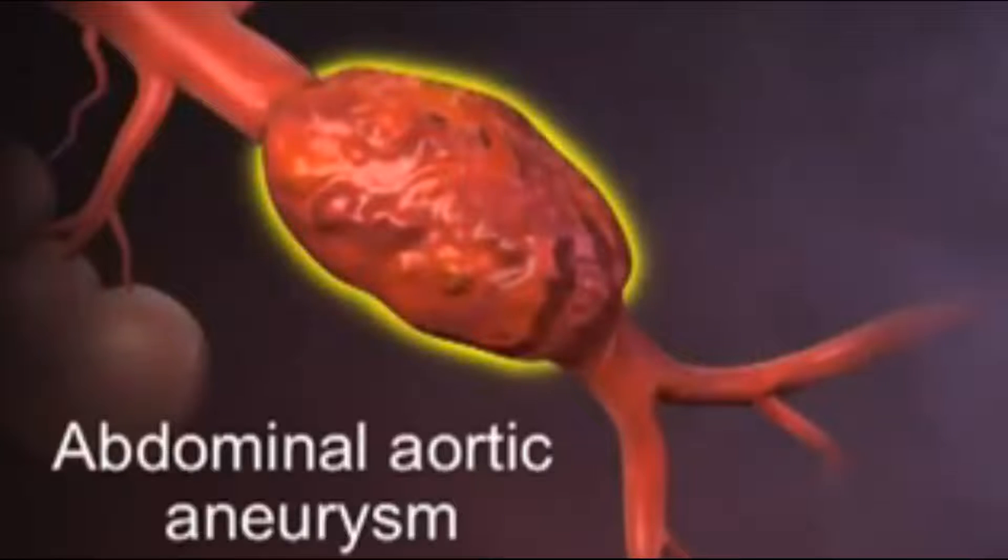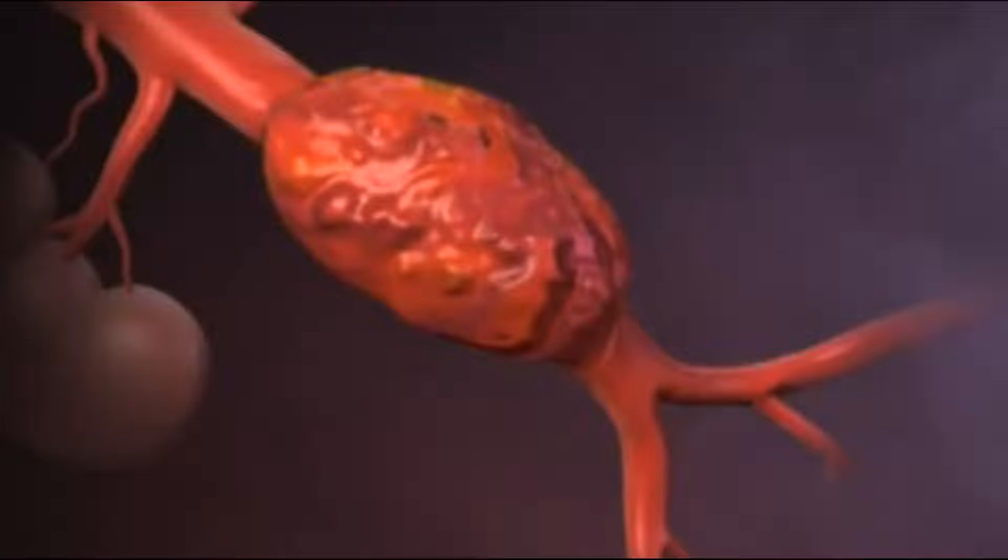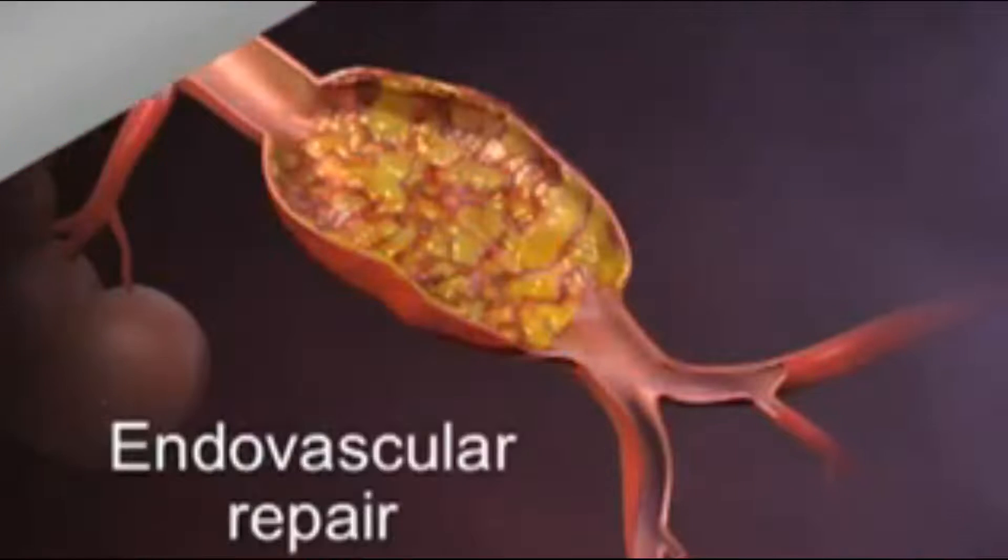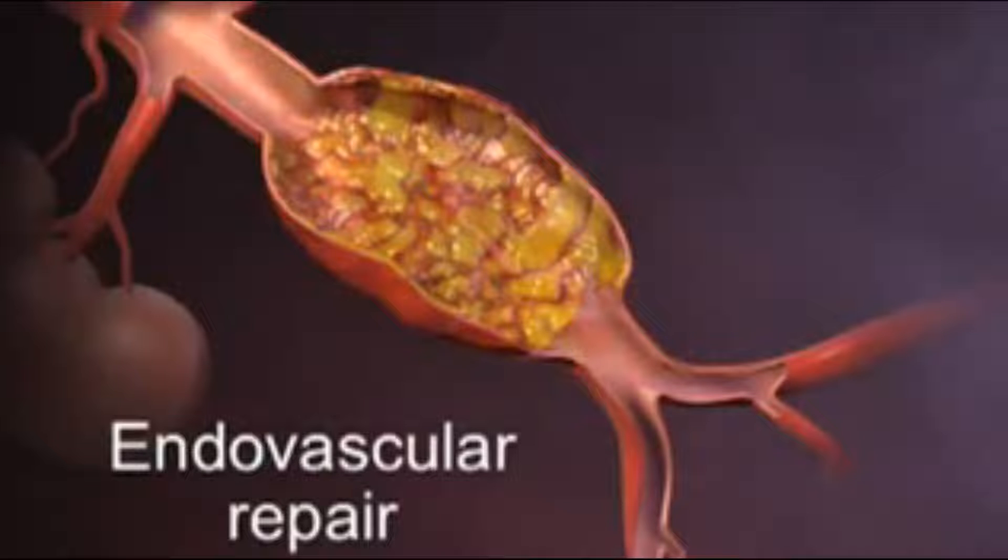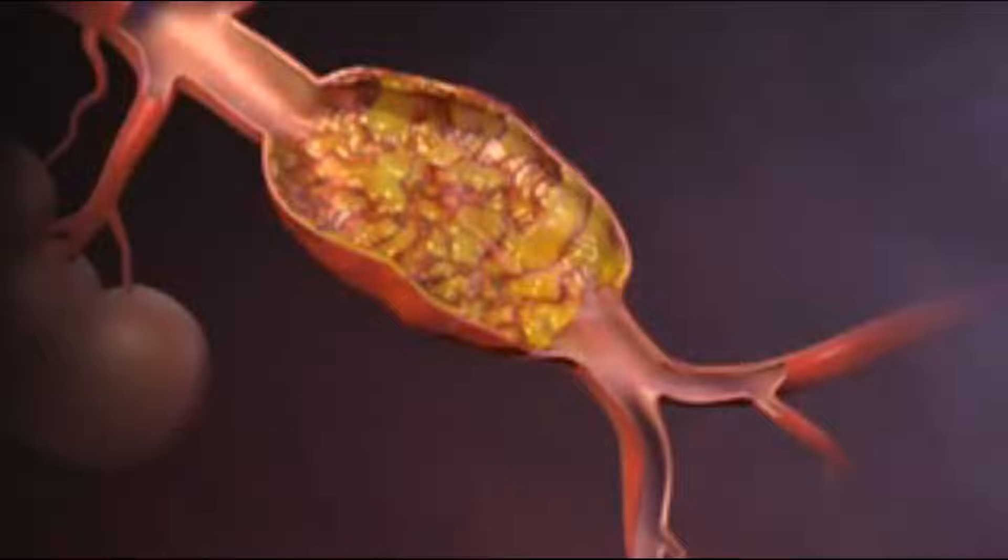The traditional approach to Abdominal Aortic Aneurysm repair has been an open surgical procedure. Endovascular repair using an endovascular stent graft is a more recently developed approach. In this procedure,